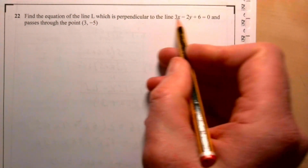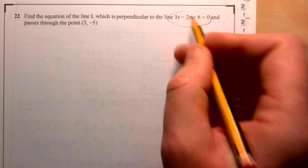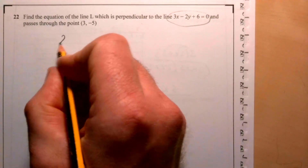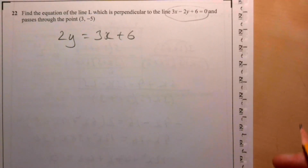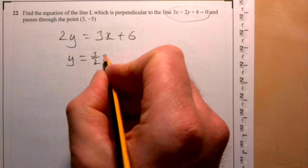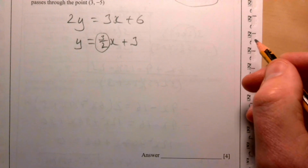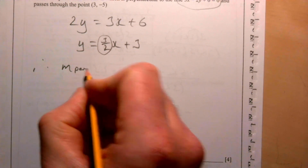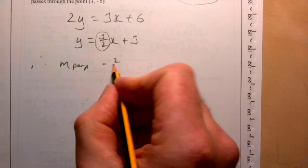Question twenty-two: Find the equation of the line perpendicular to the given line passing through the point (3, minus 5). Rearranging the given line to the form y equals mx plus c gives y equals three-halves x plus 3, so its gradient is 3 over 2. The perpendicular gradient is the negative reciprocal: minus 2 over 3.